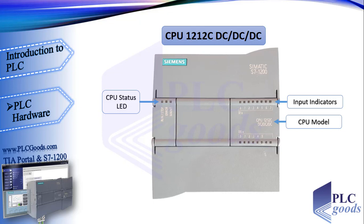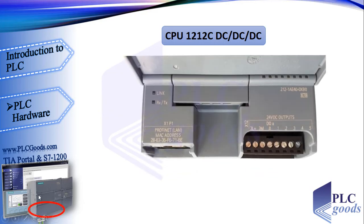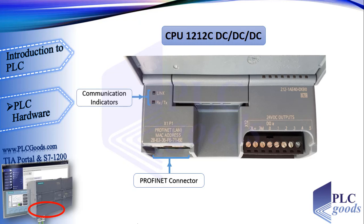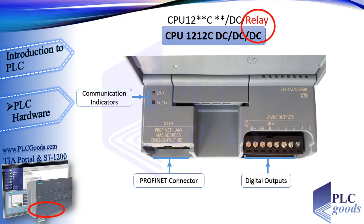Here you can see the PLC model. Next are the output LEDs, which show which output is active. At the bottom of the PLC is the LAN connector — the CPU can connect to an Ethernet network via the LAN interface, for example to a programming device or to an HMI. The LEDs here show the status of this connection. This PLC has six digital outputs powered with 24 volt DC.